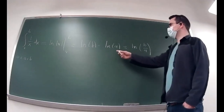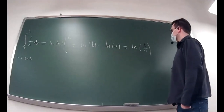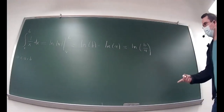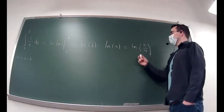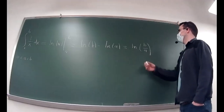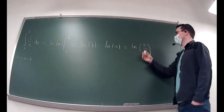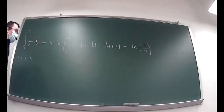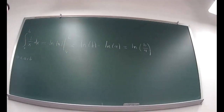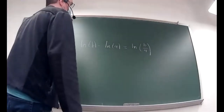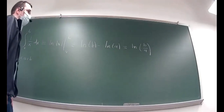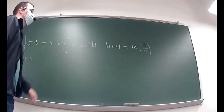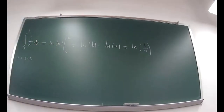Why does this logarithm rule make sense? The output of a logarithm function — you could think of it as an exponent. Logarithms behave like exponents, so when you have something to a power over something to a power, you subtract the exponents. That's an intuitive way of why that logarithm rule is true. Of course there are formal ways to show it, but the purpose of today's lecture is not to explain the logarithm rules.